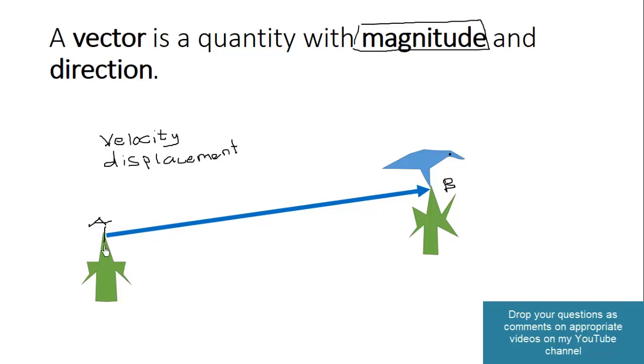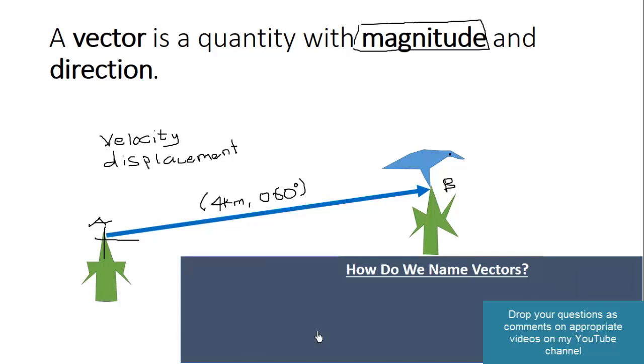So if we draw a cardinal point here and see that this angle is about, let's say, 80, so let's say that the bird flew 4 kilometers on a bearing of 060 degrees. So that is what we refer to as a vector. It has a magnitude and a direction.